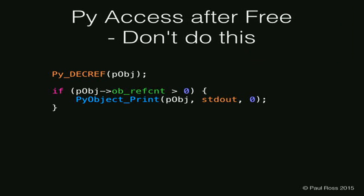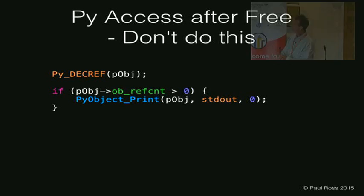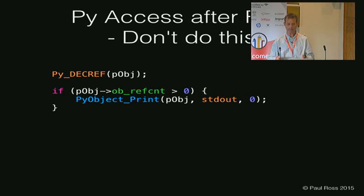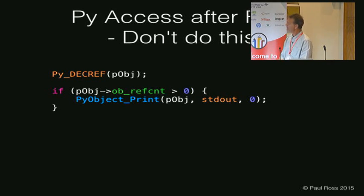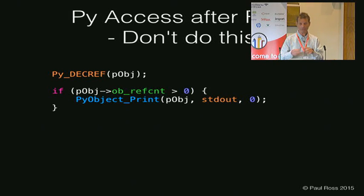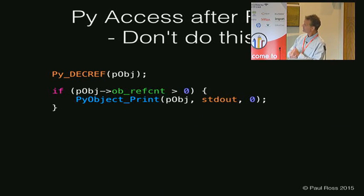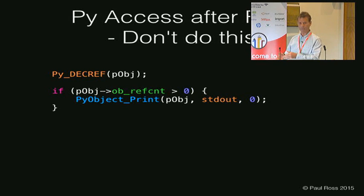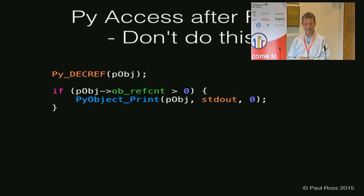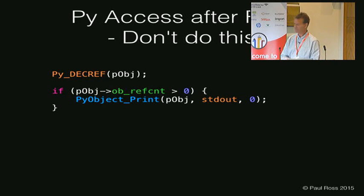Don't try to get cute with reference counts. For example, calling Py_DECREF on a p object and then checking if the reference count is above zero before printing it out — thinking you're okay because it's not a dead object. The thing is, when you call Py_DECREF and the reference count goes down to zero, CPython is free to use that memory for anything at all. It's entirely possible that when you ask what the ref count is, you're asking for some garbage value or a completely different object. So don't try to get cute with checking reference count values in an attempt to get defined behavior.